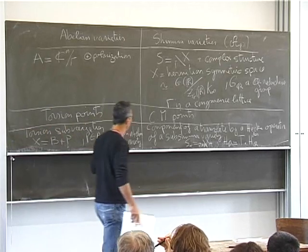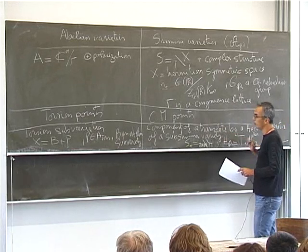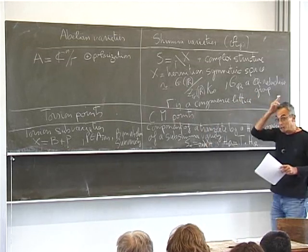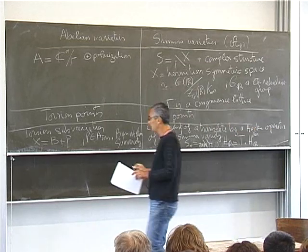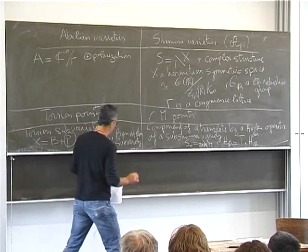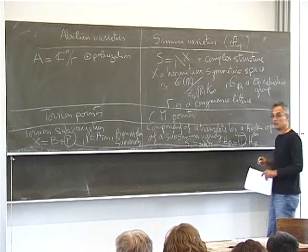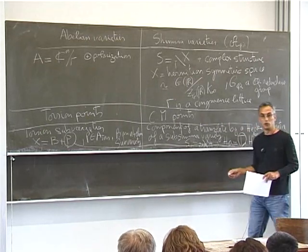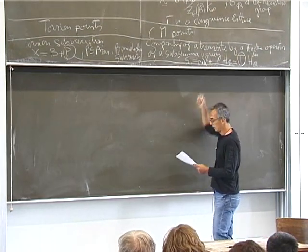A misleading point is that you might think that the translation on the abelian variety side corresponds directly to the translation on the Shimura variety side. I thought this for a long time, but I think it's false. The correct analogy is that P on the abelian side should be related to T on the Shimura side.